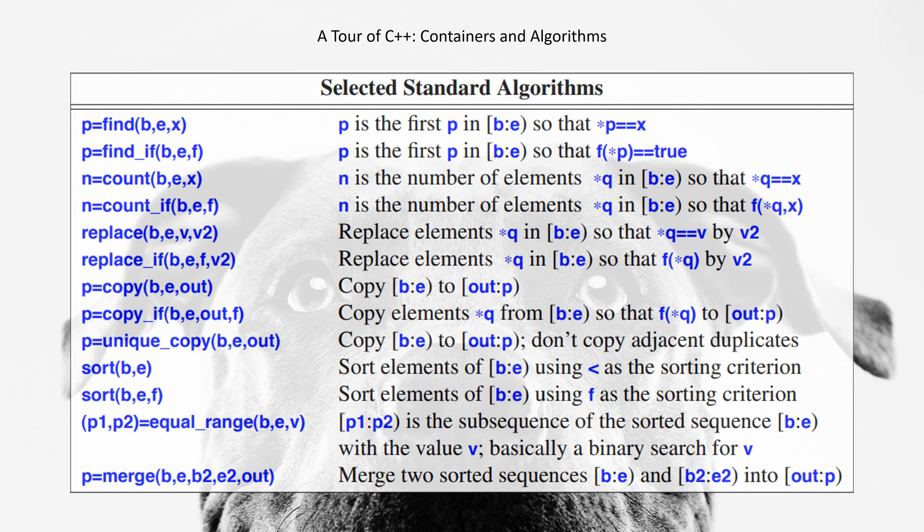sort(b,e) - sort elements of [b,e) using less than as the sorting criterion. sort(b,e,f) - sort elements of [b,e) using f as the sorting criterion.